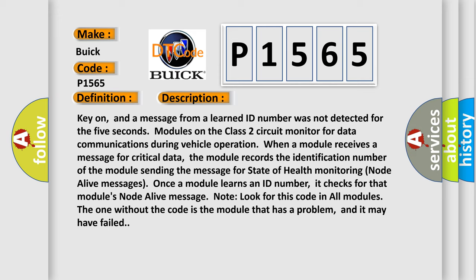Key on, and a message from a learned ID number was not detected for five seconds. Modules on the class two circuit monitor for data communications during vehicle operation. When a module receives a message for critical data, the module records the identification number of the module sending the message for state of health monitoring node alive messages.